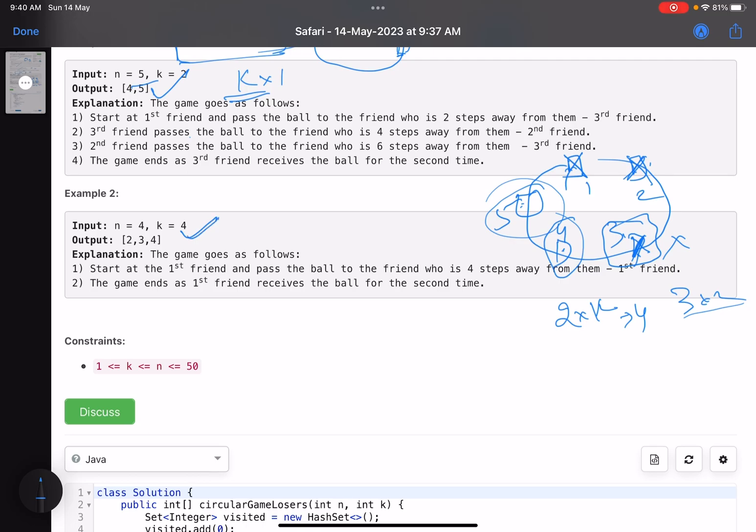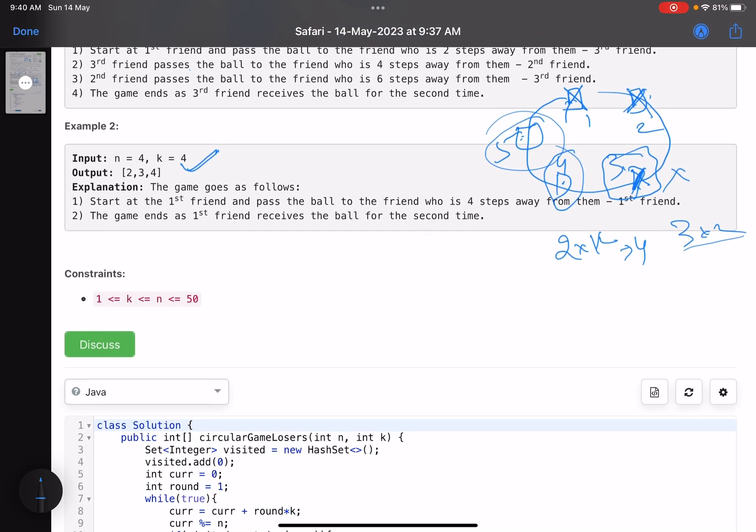I would say it's an implementation based problem. All you need to do is try to simulate it. Suppose you are here, so this is your current position. At your current position, what you are doing? You are doing current plus round number times k. This is the new position of the ball. Now if this goes beyond n, since this is a circle, you just take mod. You take a HashSet or any data structure which is keeping track of which are the values that have already visited. As soon as you see that this value was already visited, you're visiting it for the next time, end the game, break the loop, and return the values which are not visited.